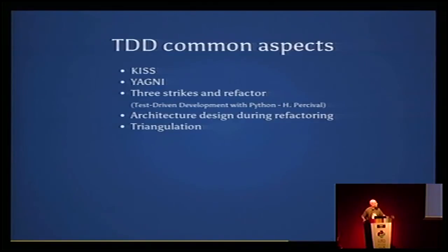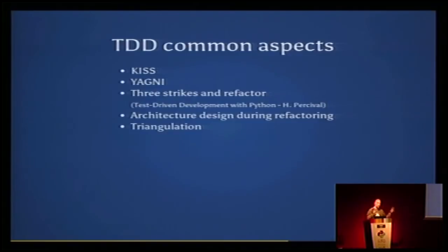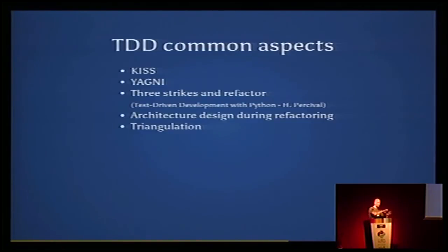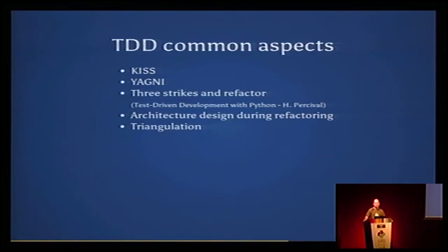Three strikes and refactor — I've taken this from 'Test-Driven Development with Python' by Percival, a very nice book I read a few months ago. It basically says: when you're in the refactor phase and you find the same functionality repeated, wait for the third occurrence of something really similar. Because if you group and factor out a mixin too soon, when the third occurrence comes, it may not work easily with the mixin you've just done, requiring more refactoring. Going for four or five is not good either, so three strikes is a nice balance. You can do all the architecture design when you refactor, and the beauty is that because you have the tests, you can refactor with confidence.